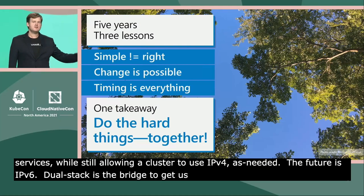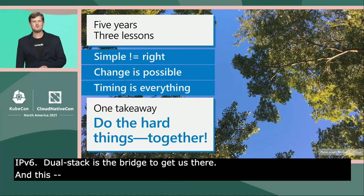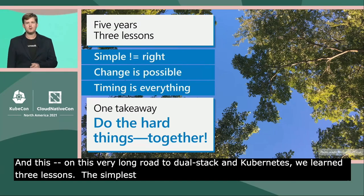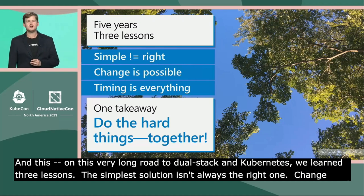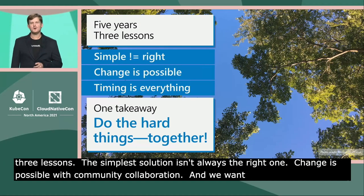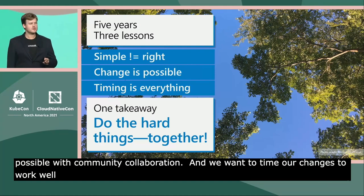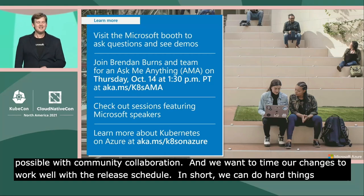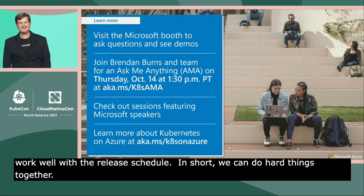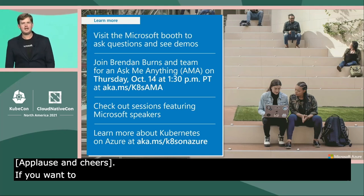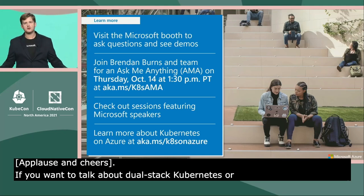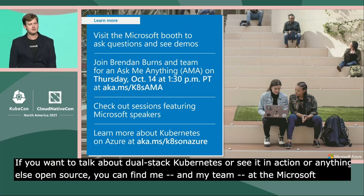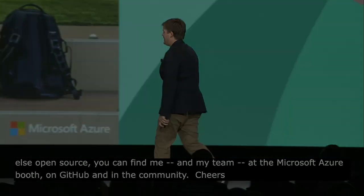On this very long road to dual stack in Kubernetes, we learned three lessons: the simplest solution isn't always the right one; change is possible with community collaboration; and we want to time our changes to work well with the release schedule. In short, we can do hard things together. If you want to talk about dual stack Kubernetes or see it in action, or anything else open source, you can find me and my team at the Microsoft Azure booth, on GitHub, and in the community. Cheers.